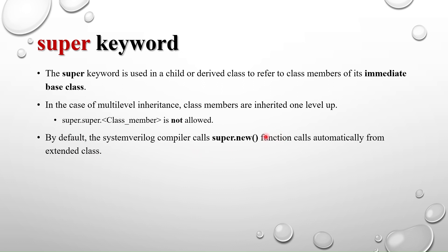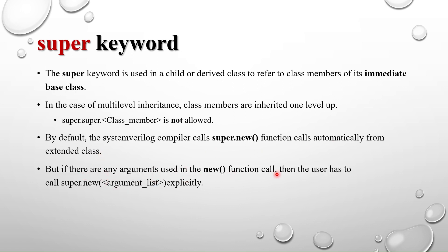By default, the SystemVerilog compiler automatically calls super.new from the extended class, so you don't need to write it explicitly when there are no arguments. However, if the constructor has arguments, the user must explicitly call super.new with the argument list in the extended class, since we are passing specific values.